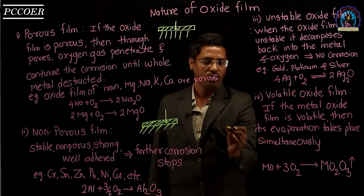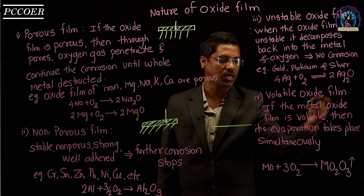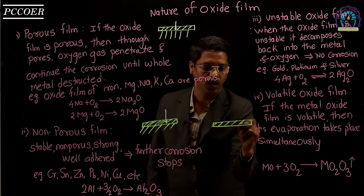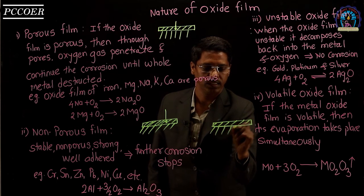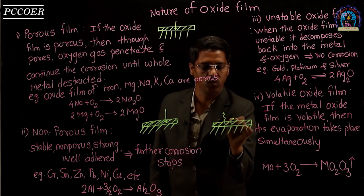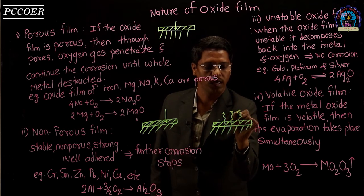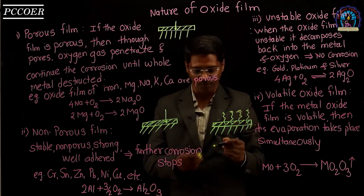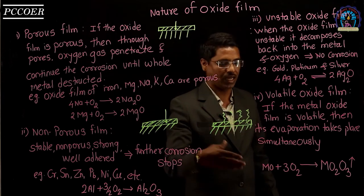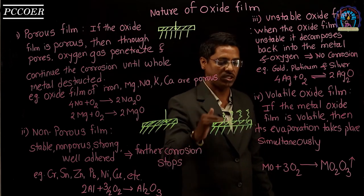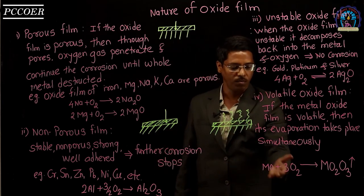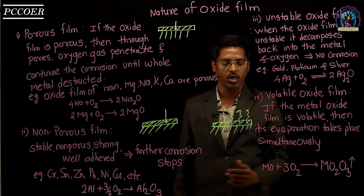The last type of oxide film is the volatile oxide film. When the oxide formed is volatile, it evaporates. Due to this evaporation, fresh metal gets exposed and further corrosion takes place, although the speed of evaporation is very slow. Molybdenum is the best example of a volatile oxide film — it combines with oxygen to form volatile molybdenum oxide.